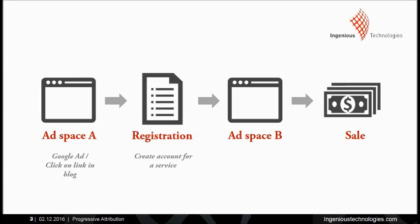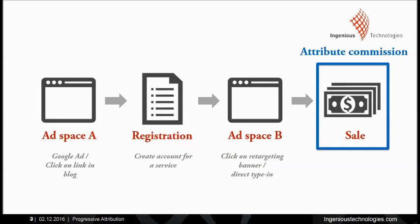Because finance and telecom offer expensive products, it will probably take a while before customers proceed to order, say, a credit card or a subscription for an internet service. Meanwhile, customers will surely produce new touchpoints. They might click on a retargeting banner or directly type in the URL of the advertiser. The problem we face here is that you can only attribute commission to the sale.